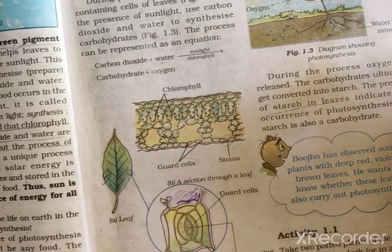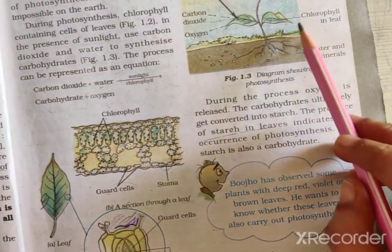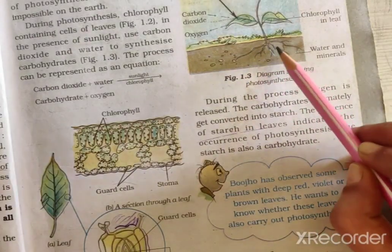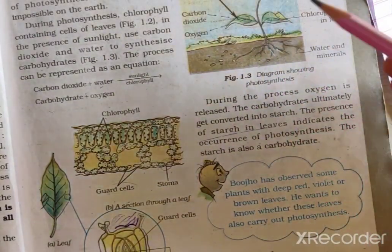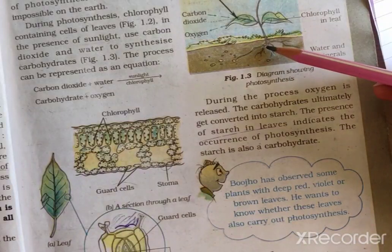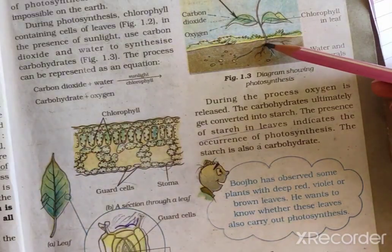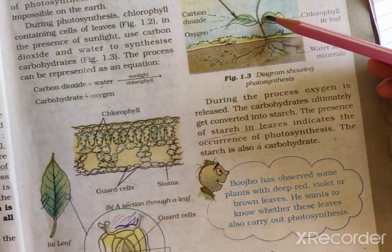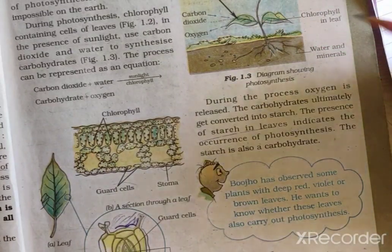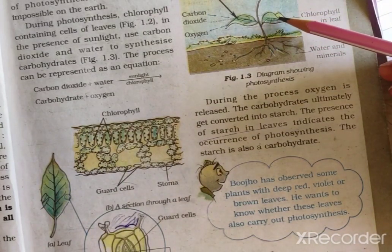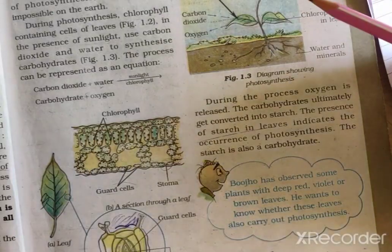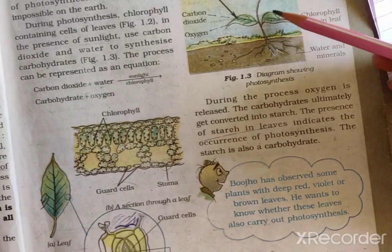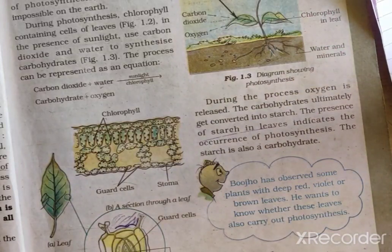This is the diagram of photosynthesis. Roots absorb water and minerals from the soil, then pass them to the stem, which carries them to the leaves. Chlorophyll is already present in leaves, and with the help of carbon dioxide and sunlight, the leaves prepare their food by the process of photosynthesis.